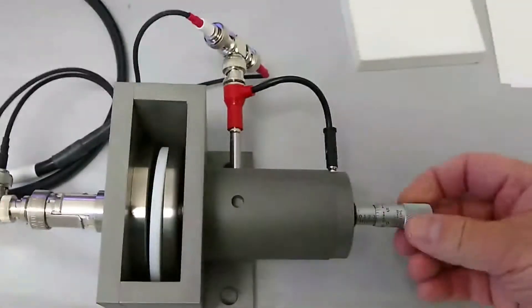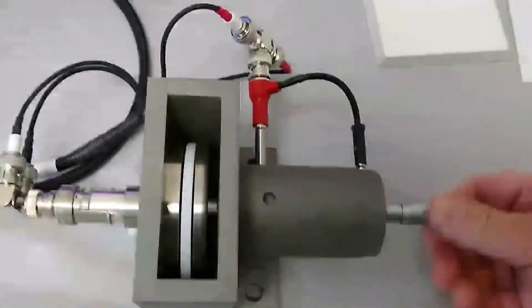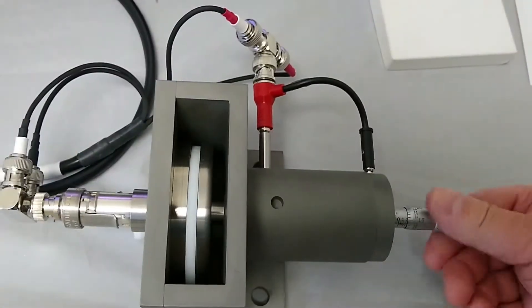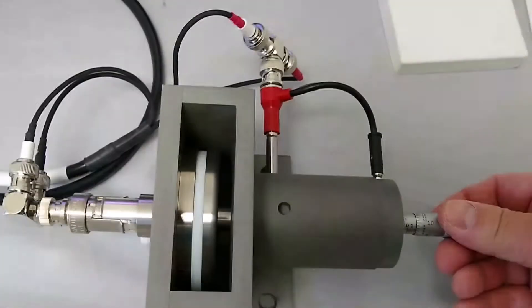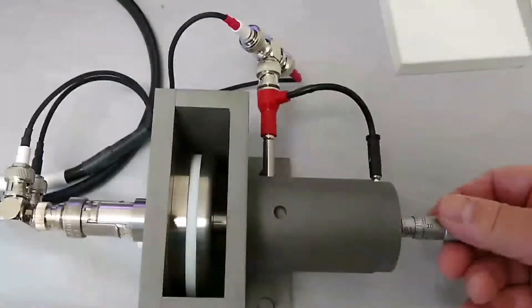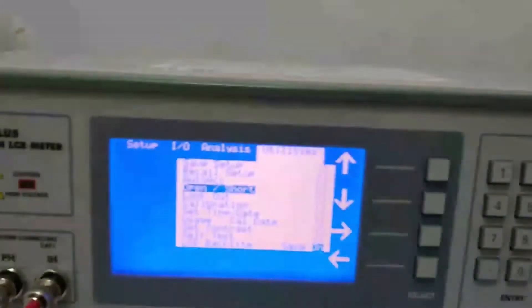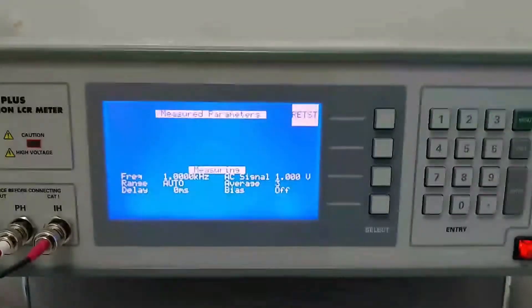With it in the sample holder, we can adjust the micrometer so the movable electrode sandwiches the Teflon standard in between. We don't want to apply too much pressure. Once we've done that, we can then press start and have the 7600 Plus perform a measurement.